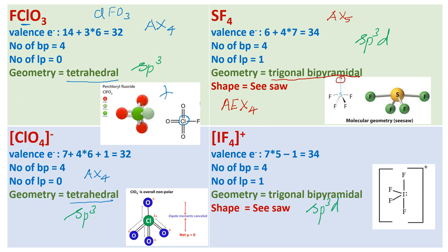Here the hybridization will be SP3D because there are five bonds. Here also the hybridization will be SP3D. This is how we have a direct connect between VSEPR theory and valence bond theory and the geometry and shape of the molecules.